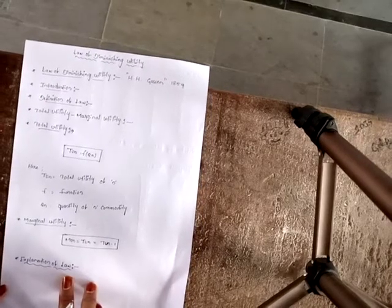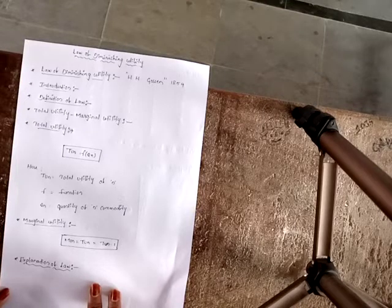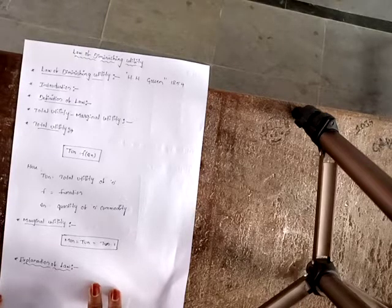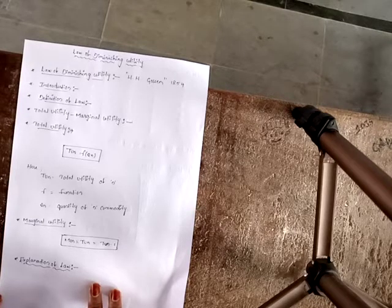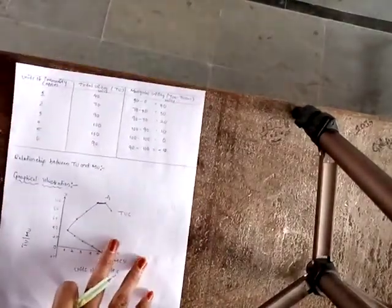Explanation of the law: this law explains the functional relationship between the stock of a commodity and its marginal utility. If a consumer goes on increasing his stock of a thing, the additional utility derived from each additional unit declines. This law can be explained with the help of the following table.